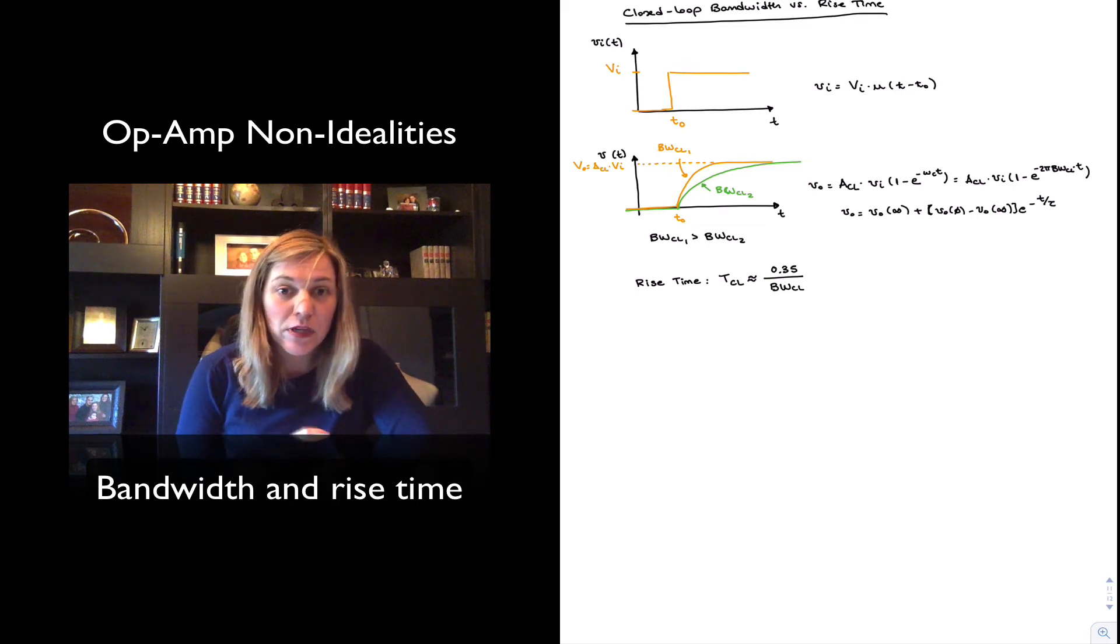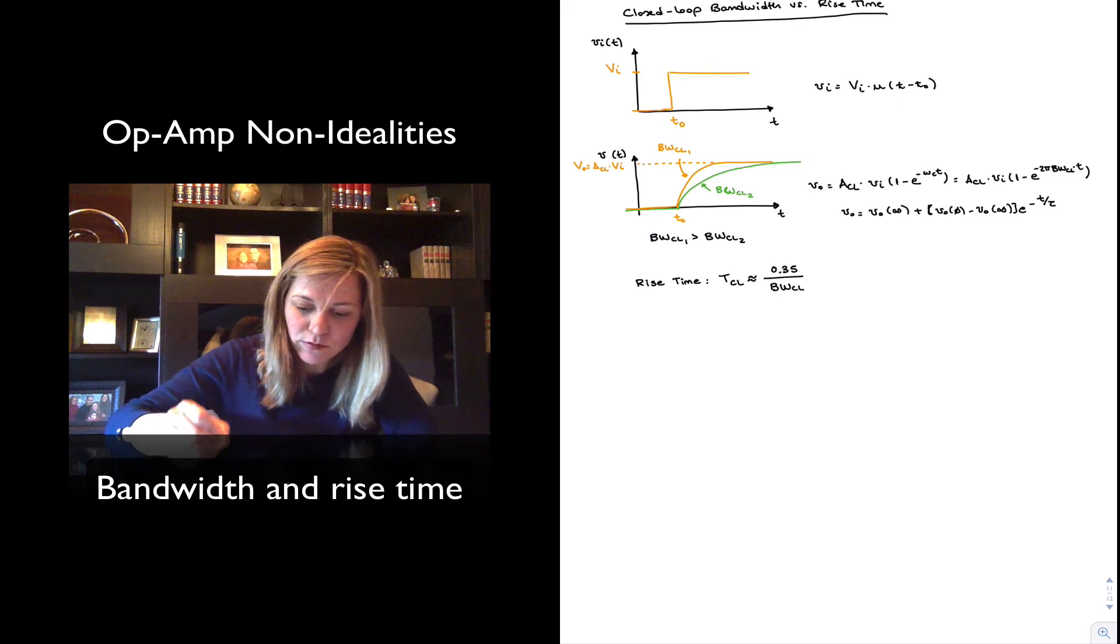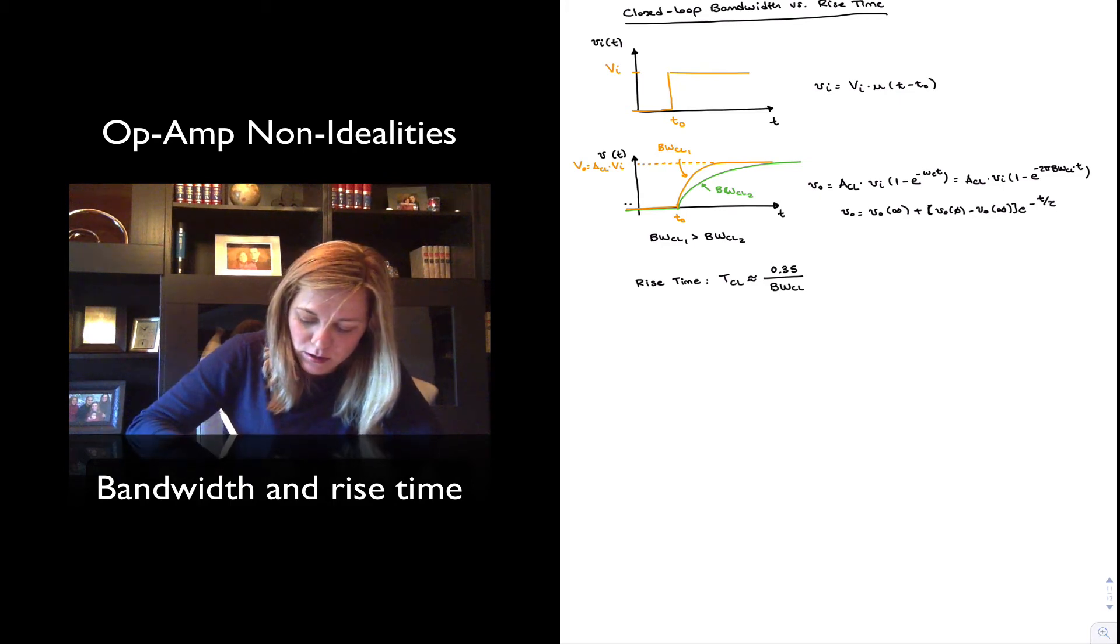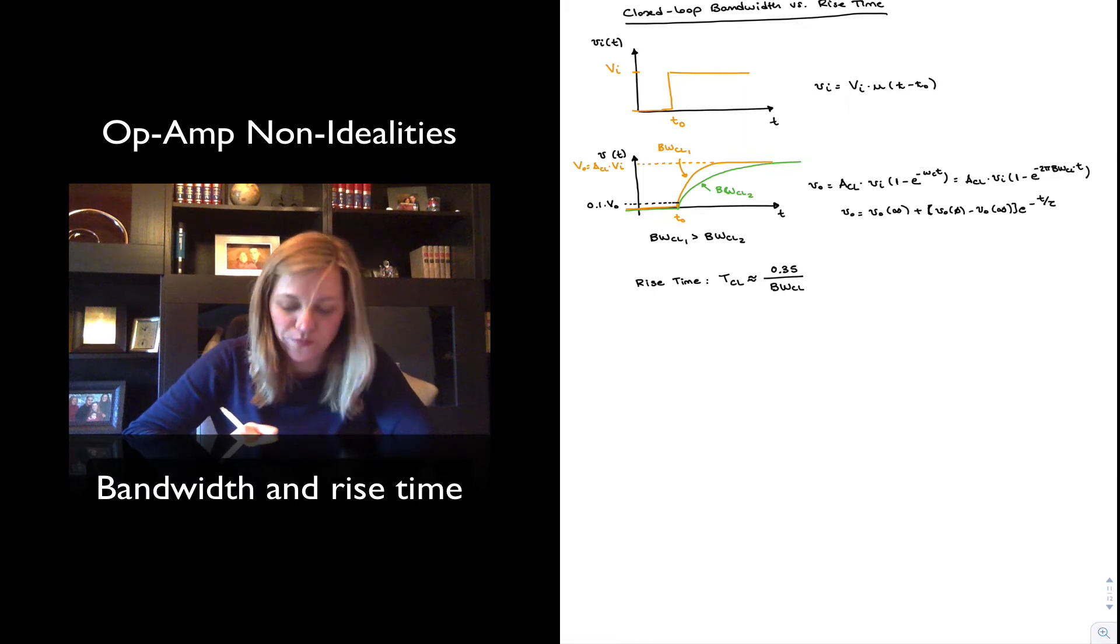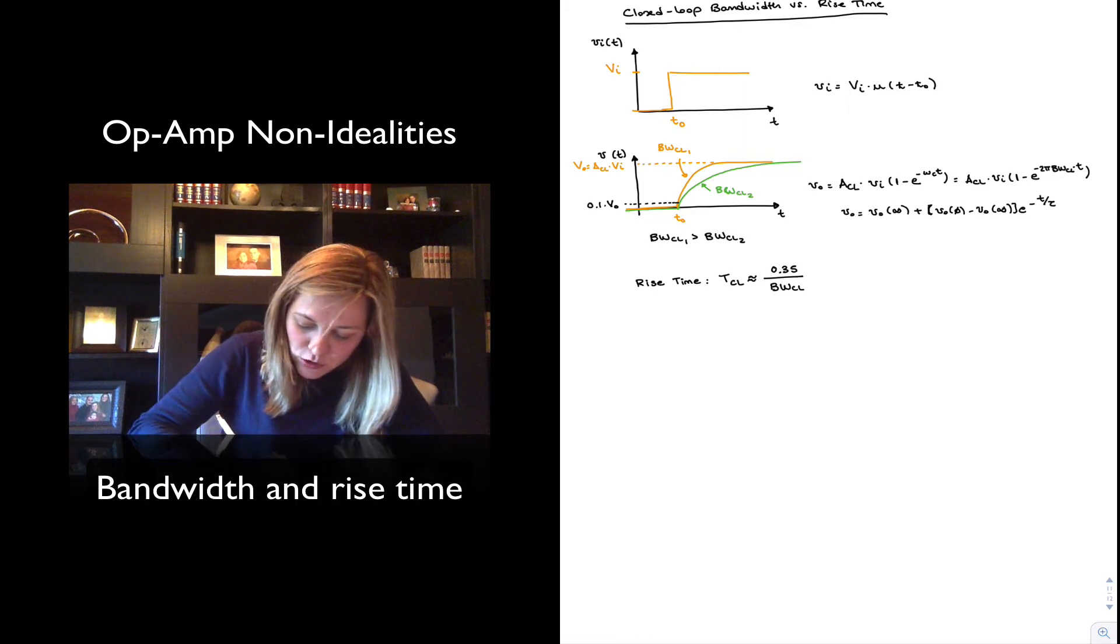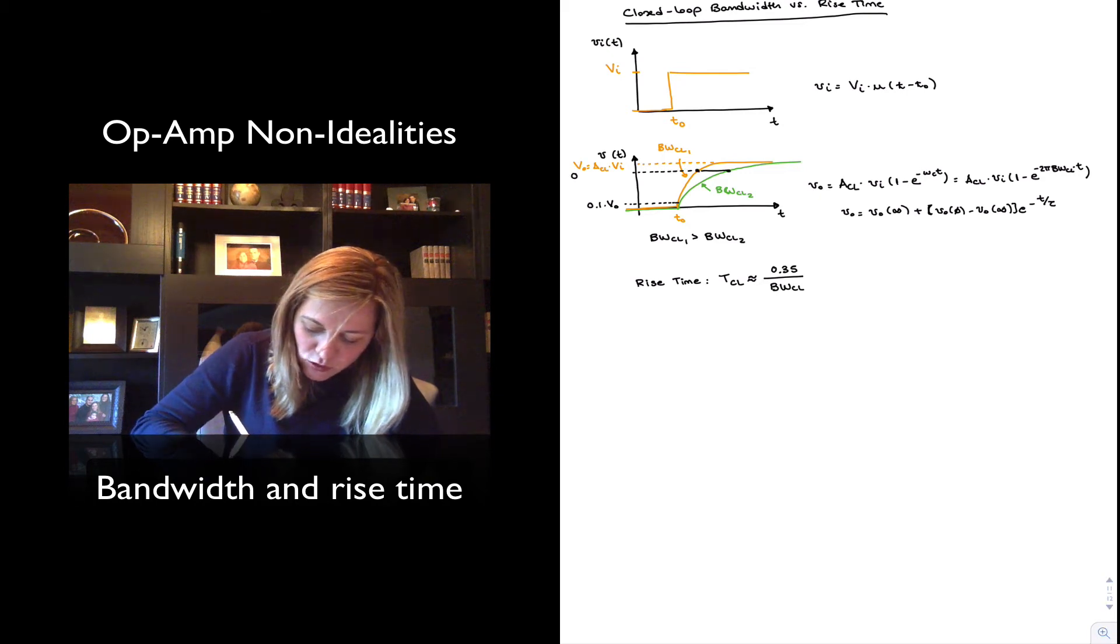Now, technically speaking, the rise time is defined as the time it takes the output signal to go from 10% of its final value to 90% of its final value. So this will be the time it takes to go from this point, where this will be 0.1 times the final VO, to this point over here, which is when you reach 90%, so 0.9 times the final VO.